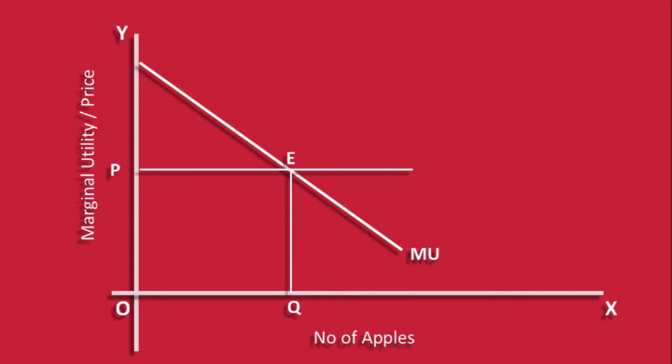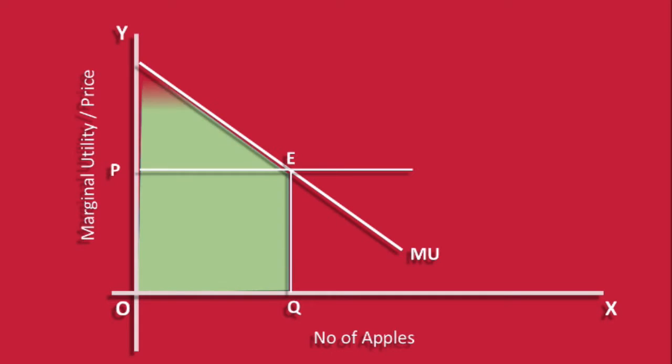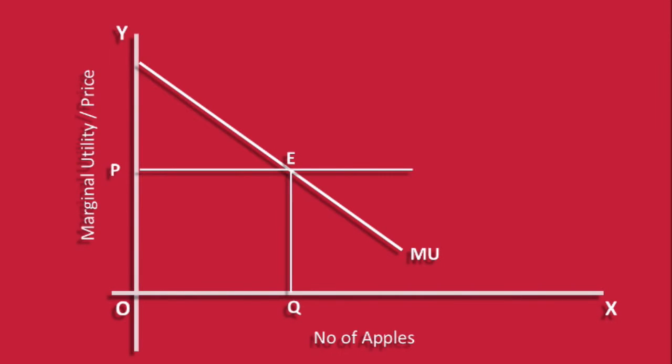His total utility is also maximum. It is shown by the green color shaded area. Equilibrium quantity is Q number of apples.